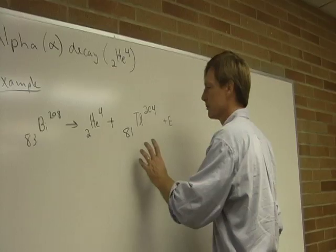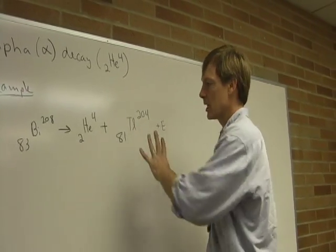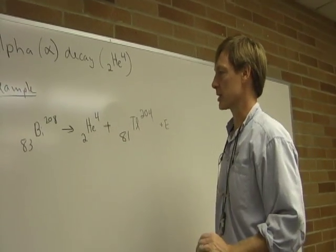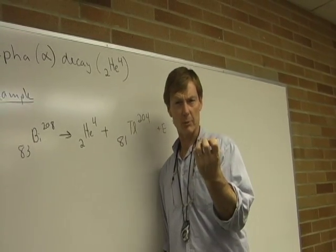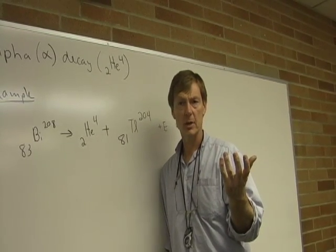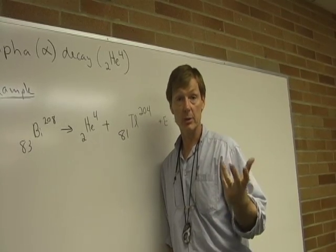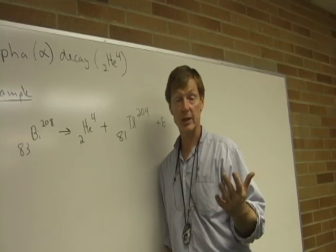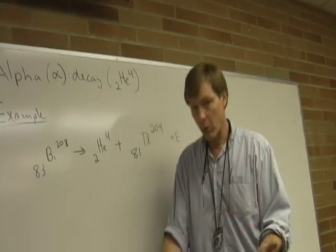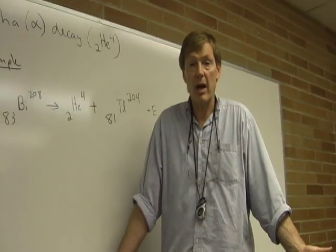Okay? We know how to do a nuclear reaction equation now. Alpha particles are big. They're helium, right? And you can block helium with a helium balloon, right? A helium balloon keeps the helium in. So it doesn't take much to block alpha particles, because they're helium. So clothing will stop alpha radiation.